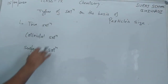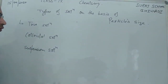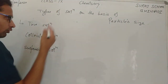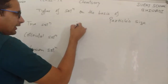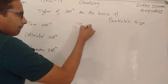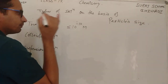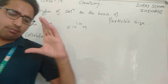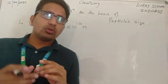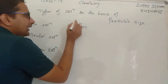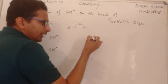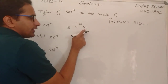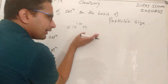True solution — क्योंकि आप particle size के हिसाब से classify कर रहे हो, तो true solution में particle का size क्या होता है? True solutions वो solutions होते हैं जिसमें particle का size 10 raise to power minus 10 meter के बराबर या उससे छोटा होता है। You define it as: the solution in which particle size is less than or equal to 10⁻¹⁰ meter।